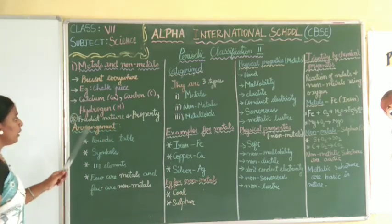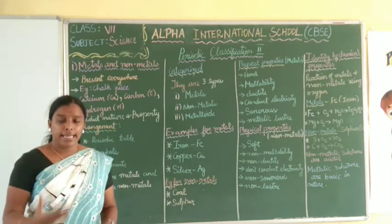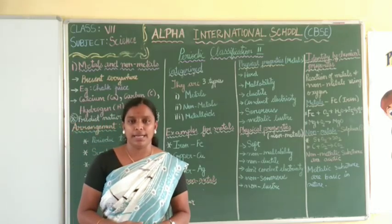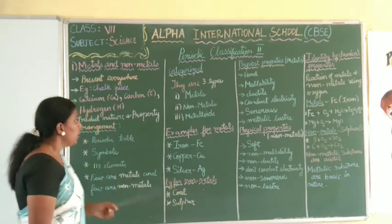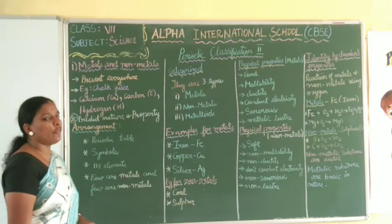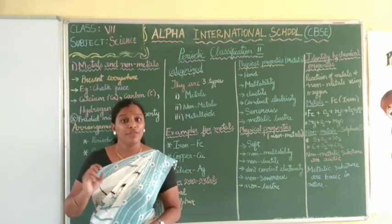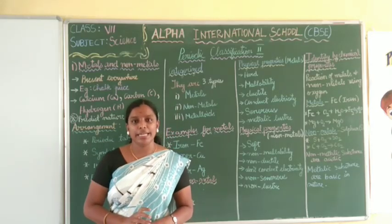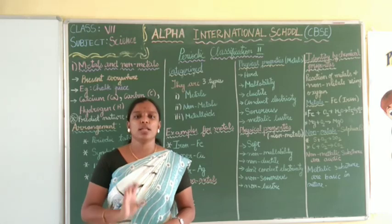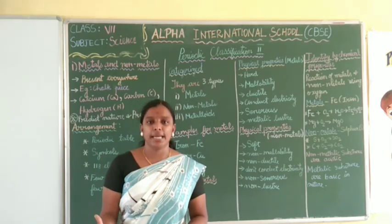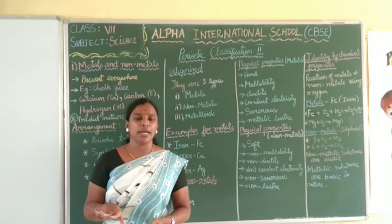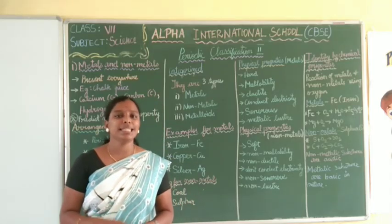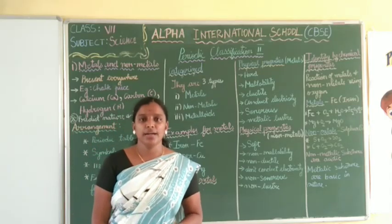Now, why is this periodic table needed? What is the reason we keep a periodic table? This periodic table is used to predict the nature and properties of elements. If you are taking an element, we need to know its properties and characteristics. For that reason, scientists modified the periodic table to a new modern periodic table where elements are arranged.